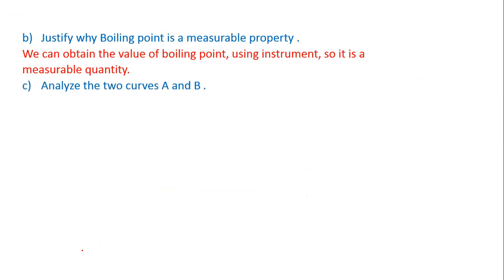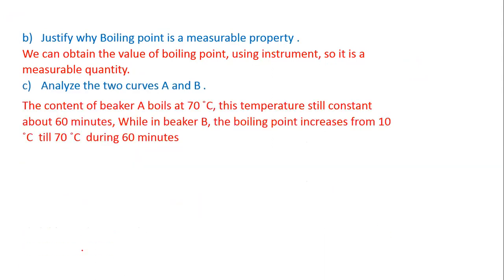Analyze the two curves A and B. The content of beaker A boils at 70 degrees Celsius. This temperature stays constant for about 60 minutes. While in beaker B, the boiling point increases from 10 degrees till 70 degrees Celsius during 60 minutes.